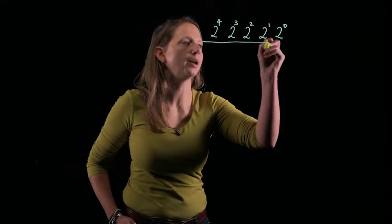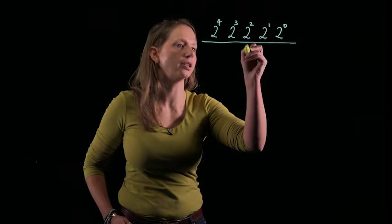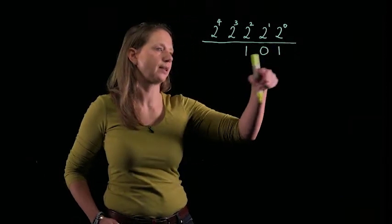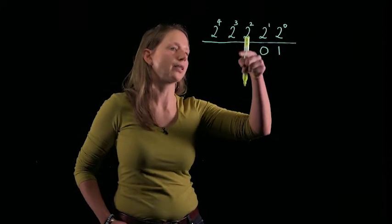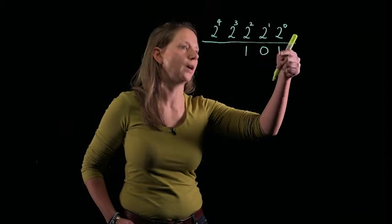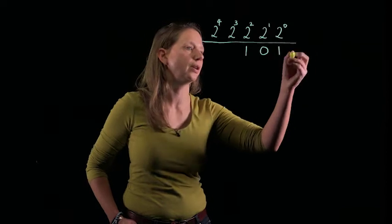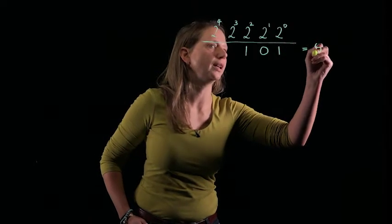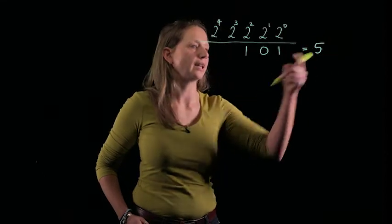And when you write a number in a binary representation, you just use 1s and 0s. So this number here is a representation of 1 lot of 2 squared and 1 lot of 2 to the 0, so that is equal to 5 in decimal notation.